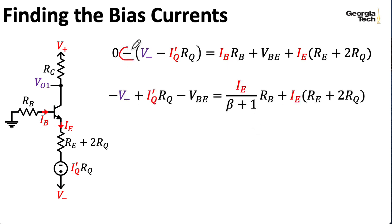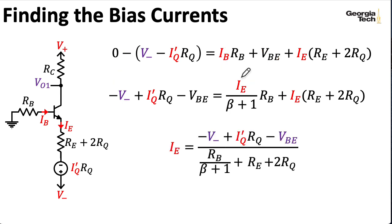So let me take this minus sign and distribute it through, and we'll also take VBE and move it onto the left-hand side here. We'll rewrite IB as IE over beta plus 1. So now I have everything in terms of IE, and I can write this expression here.